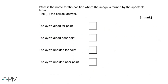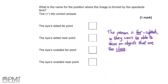What is the name for the position where the image is formed by the spectacle lens? Remember that the person is far-sighted, so they won't be able to focus on objects that are too close. The answer is the eye's unaided near point — the image formed by the spectacle lens is formed at the point where the eye is able to focus light unaided, which without the lens won't be on the retina. One mark for that.